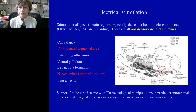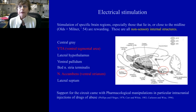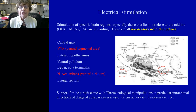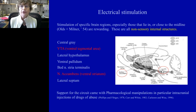Support for this internal circuit then came from pharmacological manipulations, in which intracranial injections of drugs of abuse demonstrated those same structures. In particular, highlighted here are the dopamine neurons in the ventral tegmental area and the ventral striatum, as well as other structures in which animals worked very hard to get small amounts of drugs of abuse injected into those areas.